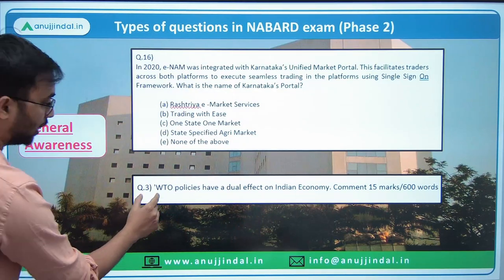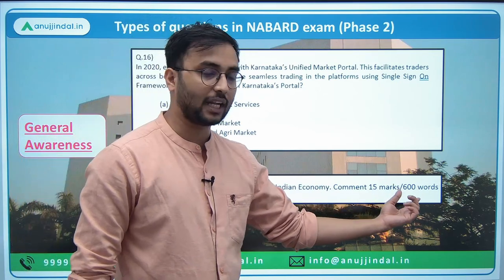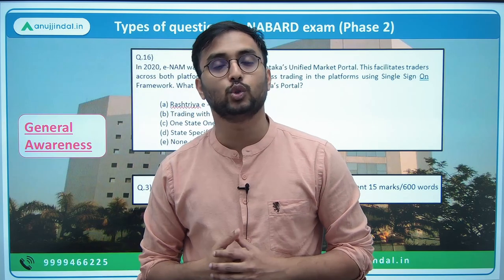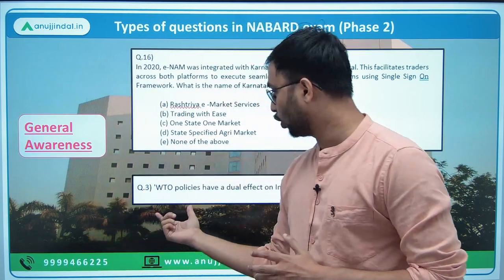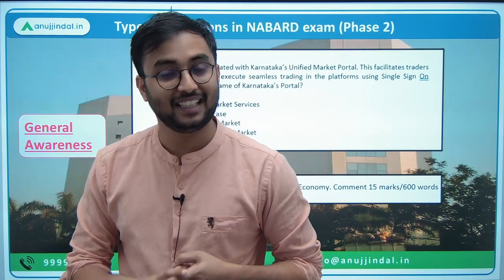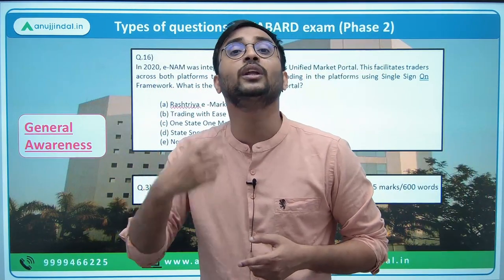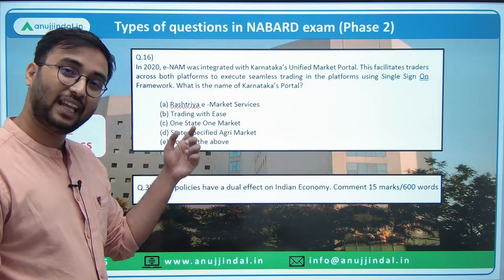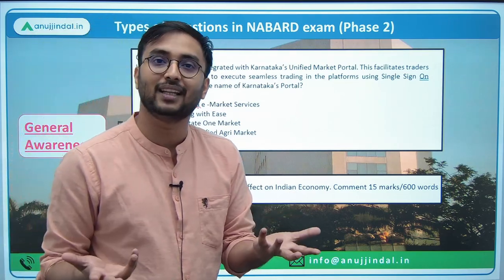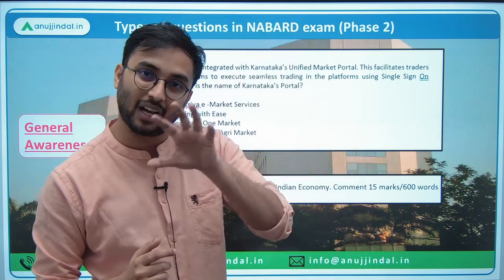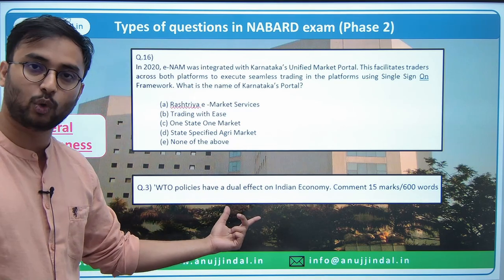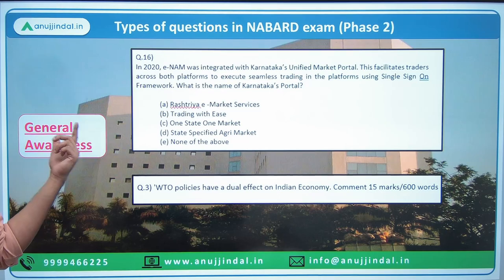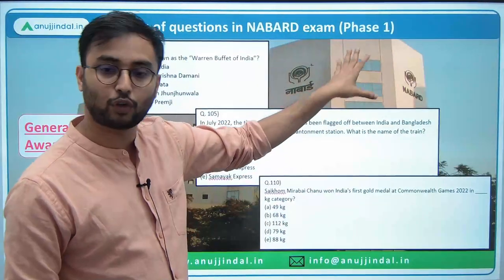In Phase 2 descriptive questions, even static topics intertwine with current affairs. For example: 'WTO policies have a dual effect on Indian economy — Comment' for 15 marks. WTO policies is an Economic and Social Issues static topic, but recent WTO initiatives, new committees, recent conferences, or current issues related to WTO — this information won't come from PIB alone; it comes from newspapers under General Awareness. That is why, for descriptive question examples, government and international initiatives, case studies — you need to cover previous six months of current affairs.